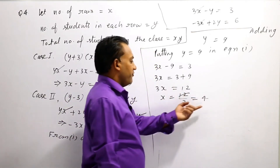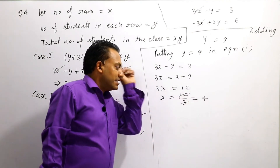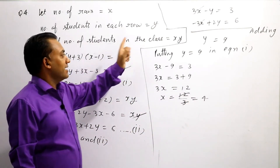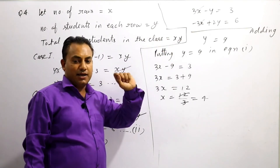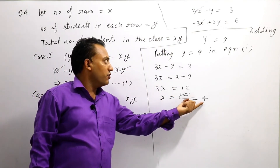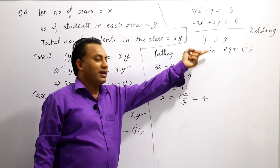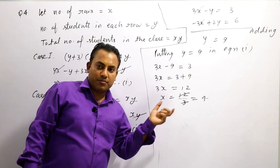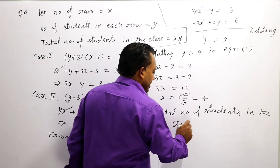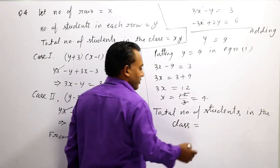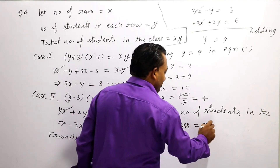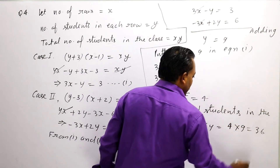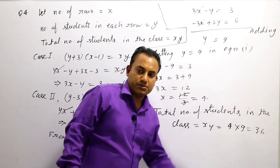तो x की value 4 मिल गई। Total number of students in the class = x × y = 4 × 9 = 36। और यहाँ आपका answer है।